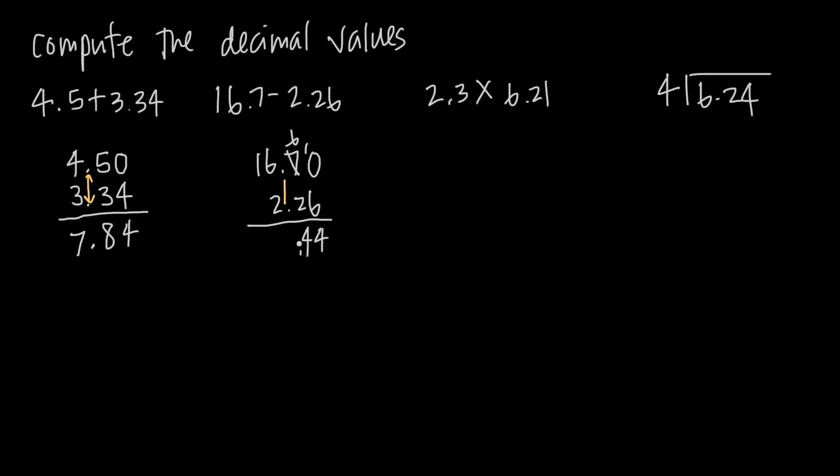6 minus 2 is 4 here. 6 minus 2 is 4. And 1 minus 0, or just 1. We get 1 here. And notice how we brought the decimal place down directly in line with where we had it in our 16.7 and our 2.26. So the result is 14.44.